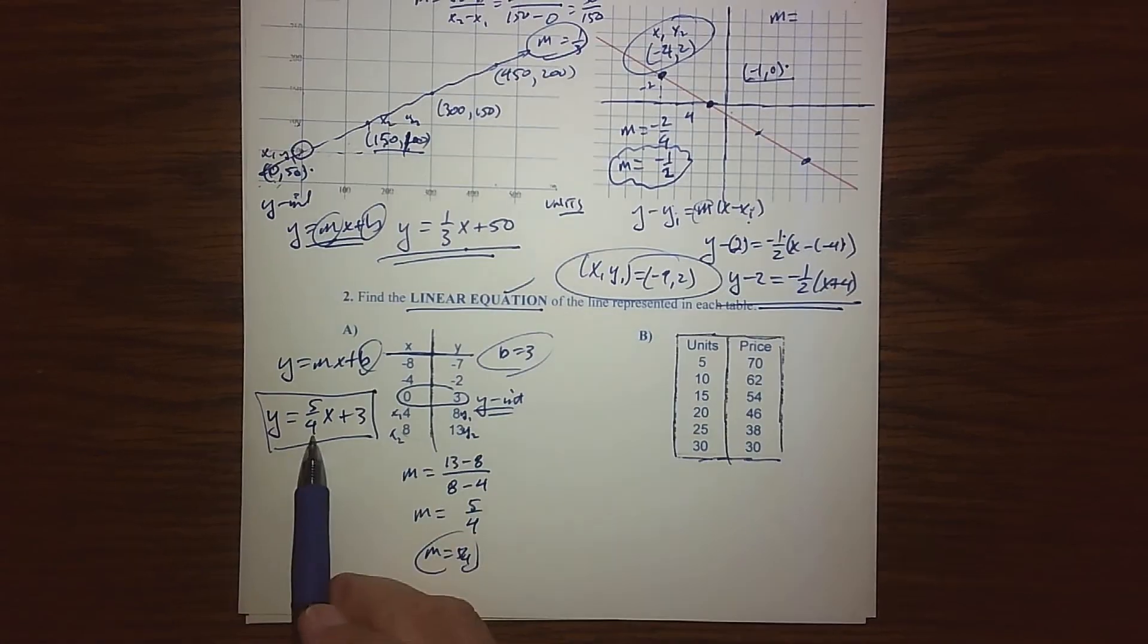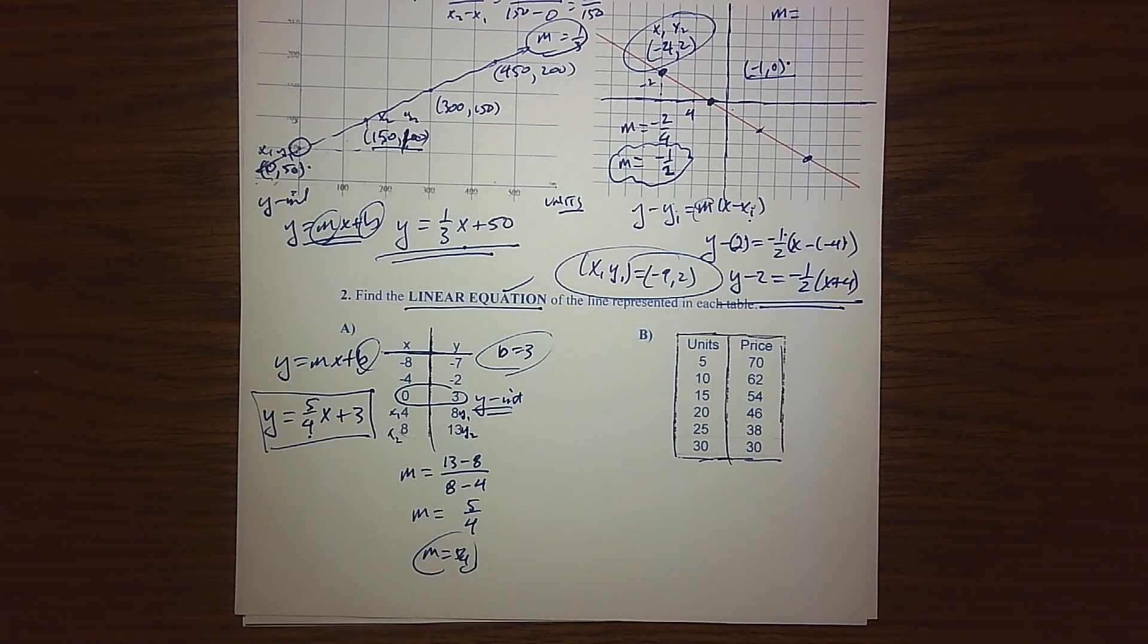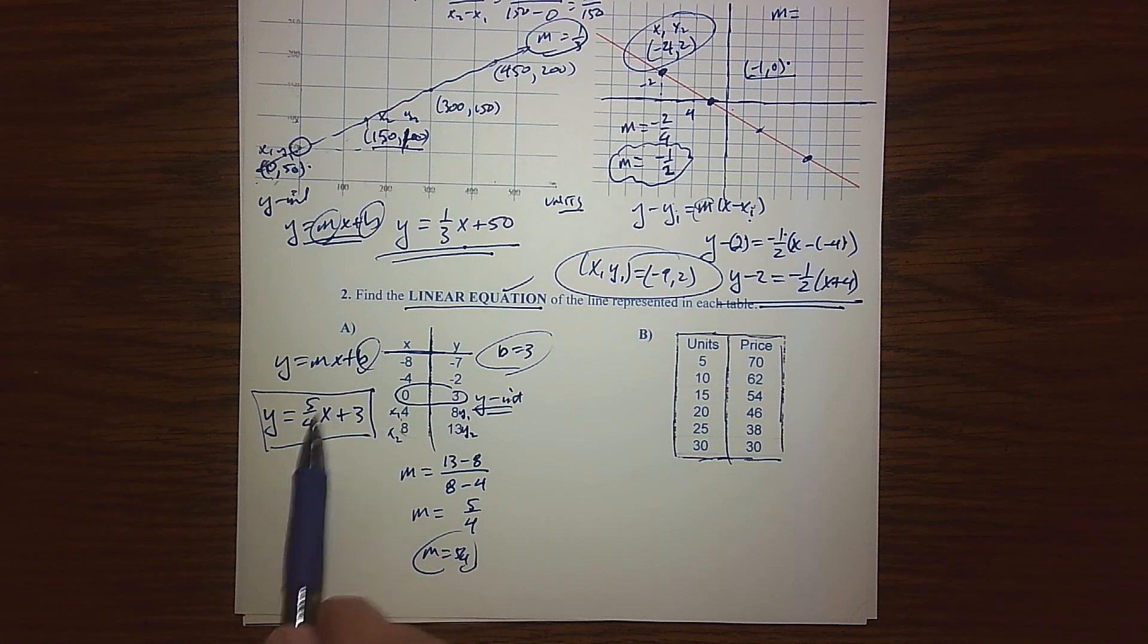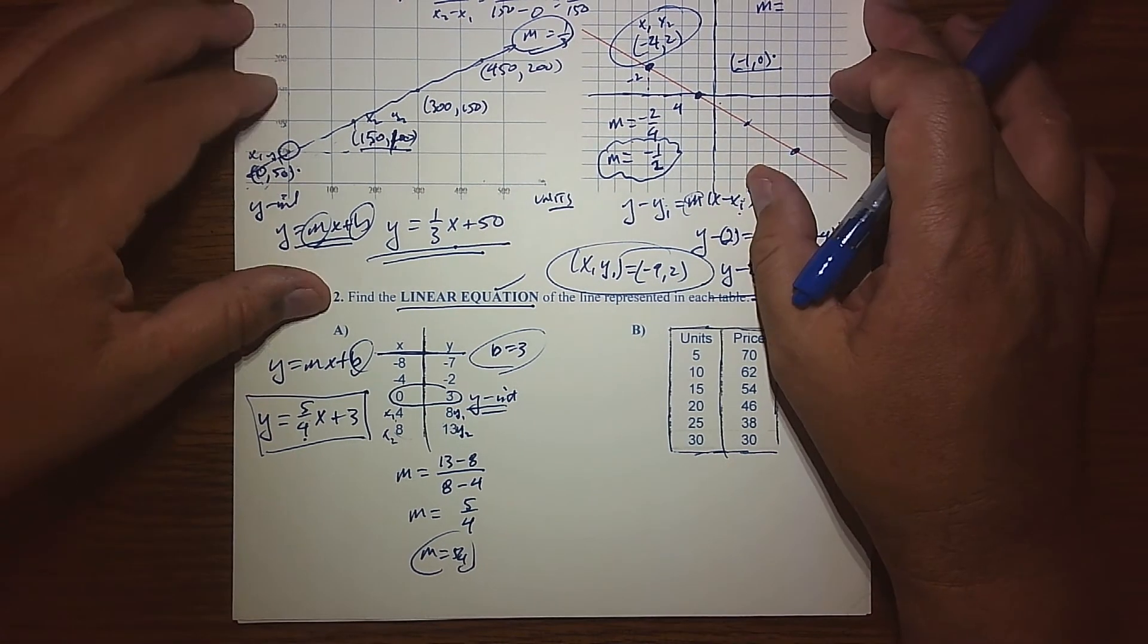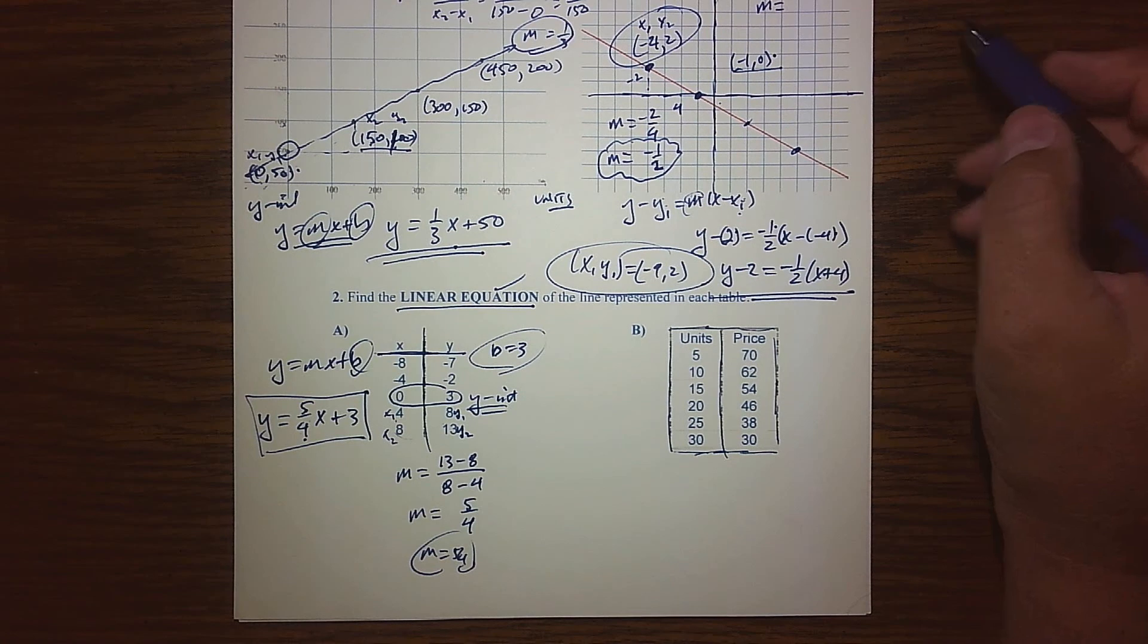So again, there's the equation that has all these solution points. Easy to check. Just plug them in and you'll see that you get what you got. Like, real quick: 4. 5 fourths of 4 is 5. 5 plus 3 is 8. All right? Even up here, negative 4. 4 into negative 4 is negative 1. Negative 5 plus 3 is negative 2. So there's a verification. So we're just finding what equation has those as solution points.